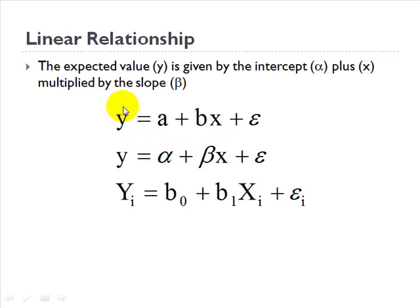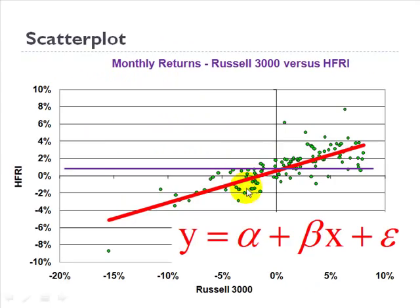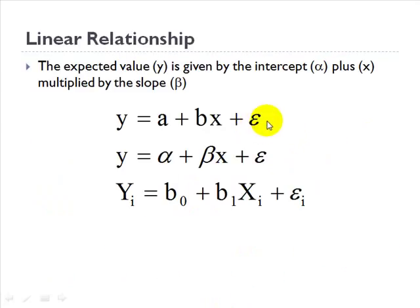Or the way I like to think about it, y depends on x. And finally, don't forget the error term. The error term reminds us that this line, it will never be a perfect fit. There is error or dispersion between the actual observations and the line.